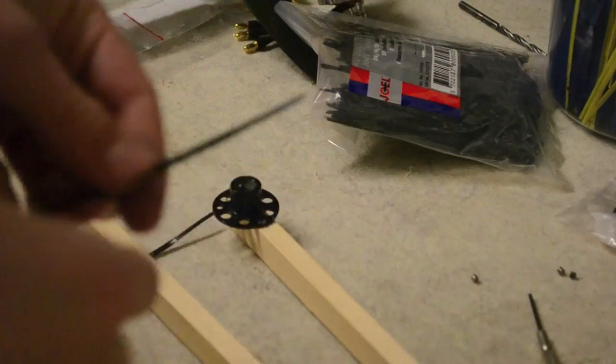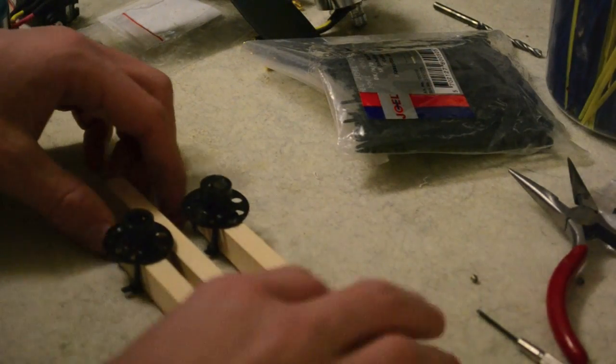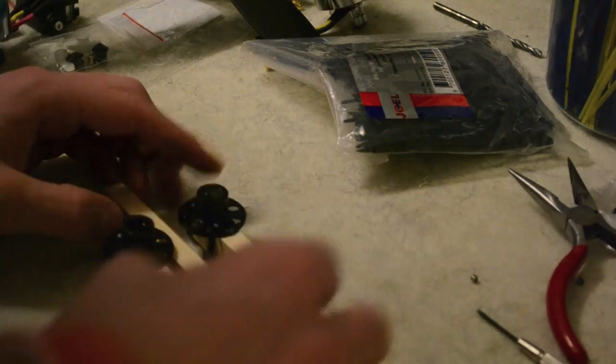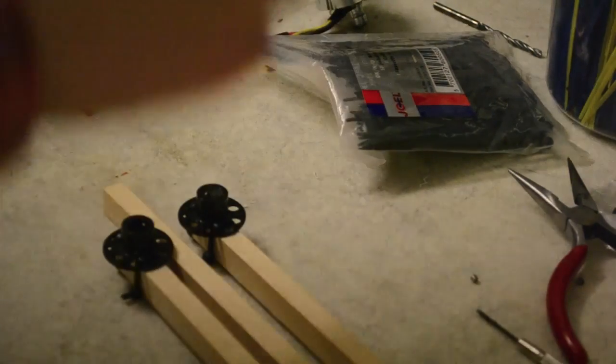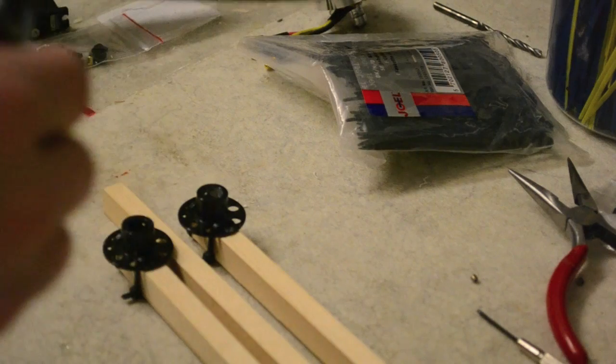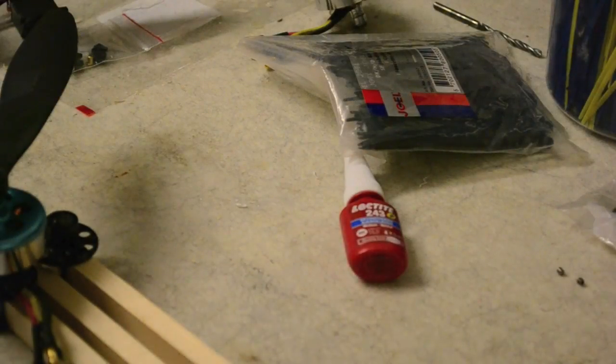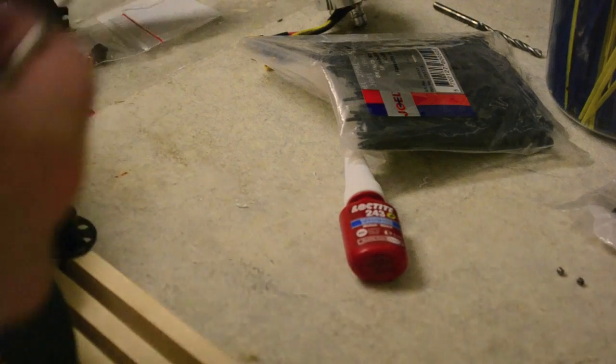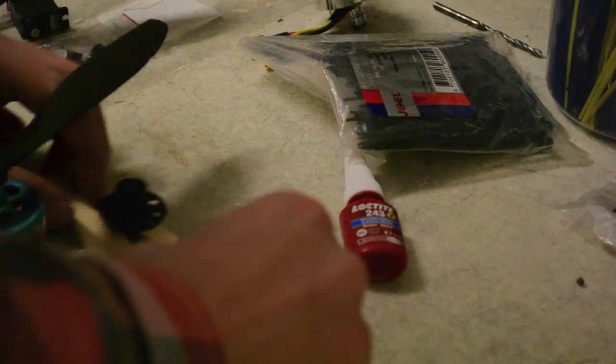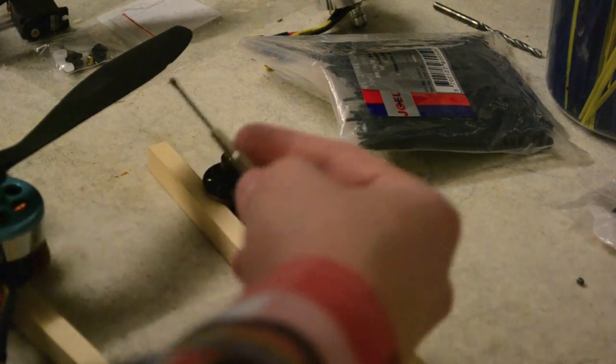You now got these mounted and now you want to go ahead and mount the motors on it. What I like to do is use Loctite on these small grub screws. Grub screws have a tendency to loosen after time, it's metal on metal, and if you use Loctite they won't loosen up because it locks them tight.